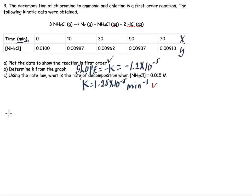So part c says use the rate law. You might be wondering, well, how do we know what the rate law is? It's a first-order reaction and we have only one chemical substance. So the rate law is just: rate is equal to k times the concentration of NH2Cl.